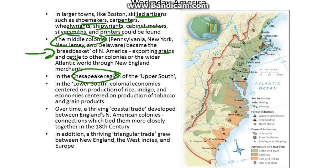In the Chesapeake region of the Upper South and the Lower South, colonial economies centered on production of rice, indigo, tobacco, and grain products. Over time, a thriving coastal trade developed between New England's North American colonies and their connections, which tied them closely together in the 18th century. In addition, a thriving triangular trade grew between New England, the West Indies, and Europe.